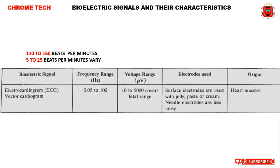ECG frequency range is 0.05 Hz to 100 Hz, and the voltage range is 10 to 5000. For fetal range, the heartbeat of a normal human is 110 times to 160 times per minute, and fetal range is 5 beats to 25 beats.